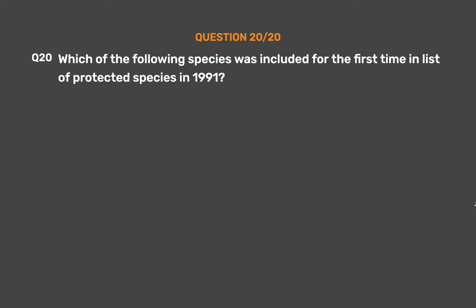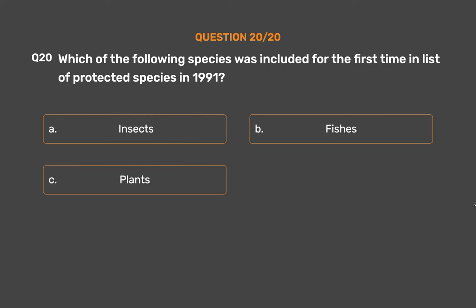Question number 20. Which of the following species was included for the first time in the List of Protected Species in 1991? Option A: Insects. Option B: Fishes. Option C: Plants. Option D: Reptiles.